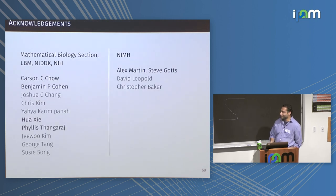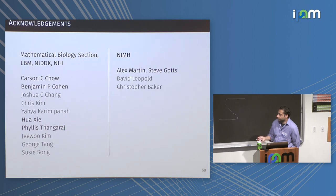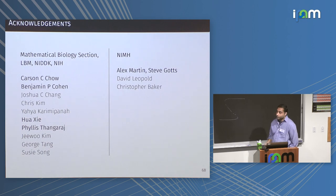A lot of this work I did with Carson Chow and continue to do with him. Ben Cohen did a lot of the hard work on the balanced state modeling. And some other really good post-baccalaureate fellows. On the experimental side, a lot of input for the quartet and related work from Alex Martin, Steve Gotts, and in consultation, David Leopold and Christopher Baker. Thank you.